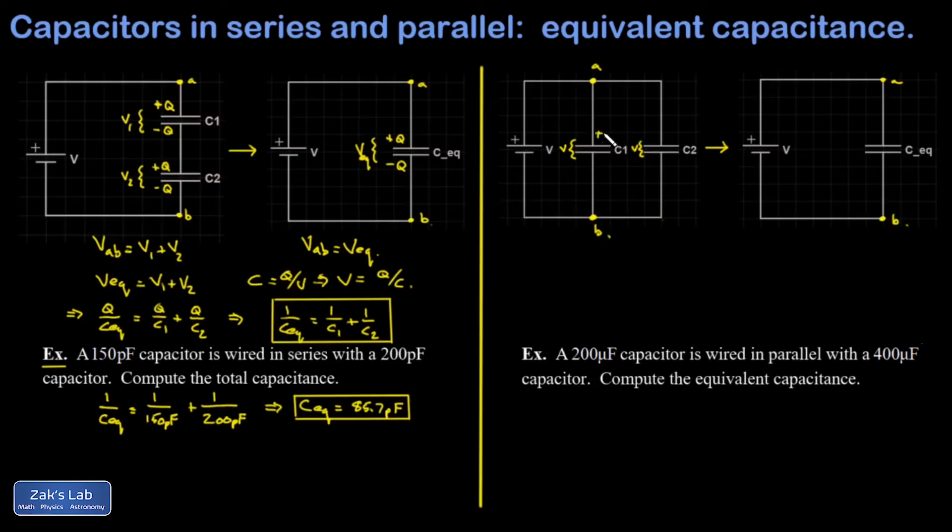C1 is going to end up with a charge of Q1 on it. C2 is going to end up with some other charge, Q2, on it.